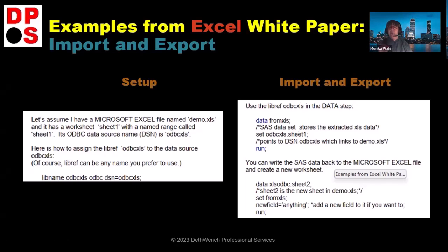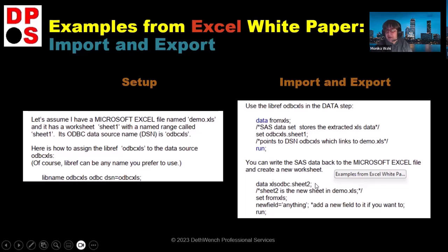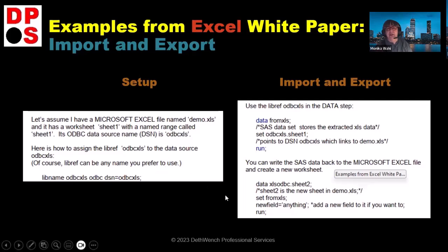You can also write SAS data back to the Excel file using a DATA step. The output dataset points to a new tab — say 't2' — in demo.xls, and you SET from the 'from_xls' dataset, then add a new field if you want, then RUN. I honestly don't know exactly what would happen if you tried that, but it demonstrates the two-way capability of the ODBC connection.